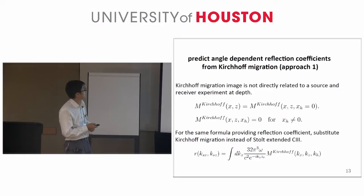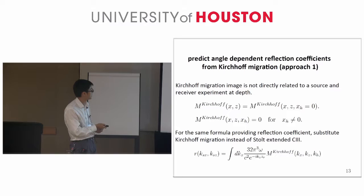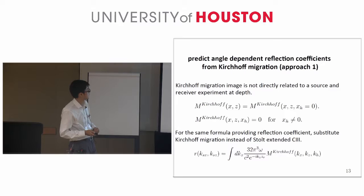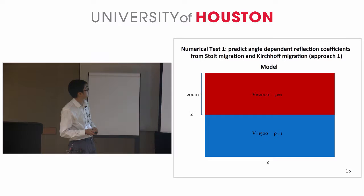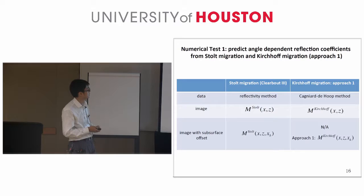Next, for Kirchhoff migration, we use the same formula as for STOE migration and substitute the Kirchhoff migration instead of the STOE extended, to determine what Kirchhoff migration would predict. I'll now show the numerical test for this comparison. Here it shows the model — it's a one-reflector model. We gave the algorithm exactly the data that the algorithms required: for STOE migration we use the data generated by the reflectivity method, and for Kirchhoff migration we use the Cagniard-de Hoop method.